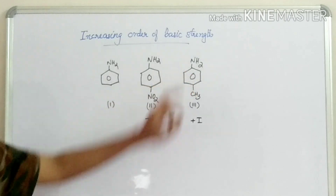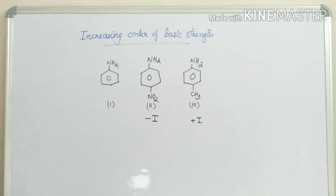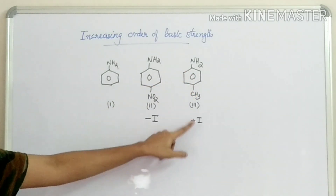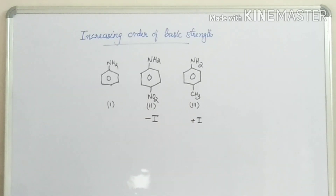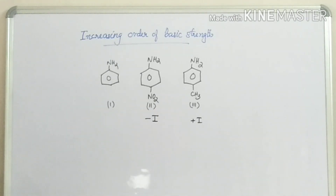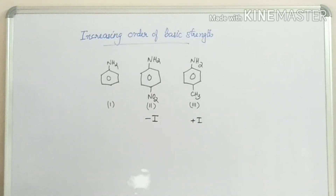If you have 5 electrons here, then you have 4 pairs of electrons. This is a plus-I group. If you have a plus-I group, you can also have electron-rich character. You can also have increased electron density. This makes it more basic.